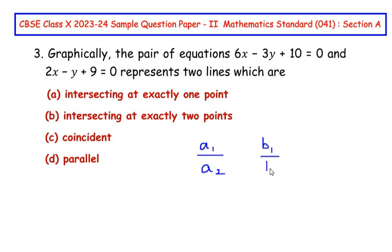So a1, a2 is the coefficient of x, b1, b2 is the coefficient of y, and c1, c2 are the constant terms. So a1 here represents 6 over a2 is going to be 2, b1 is going to be negative 3.